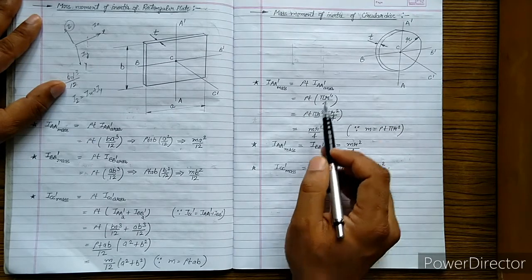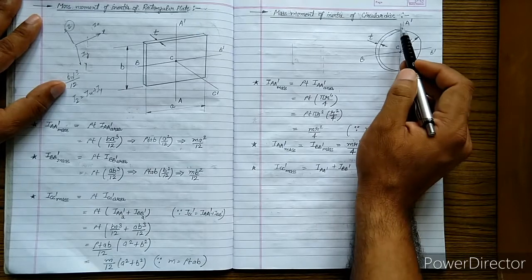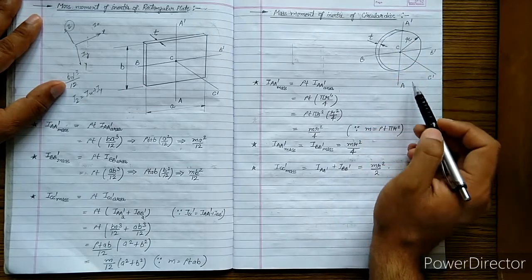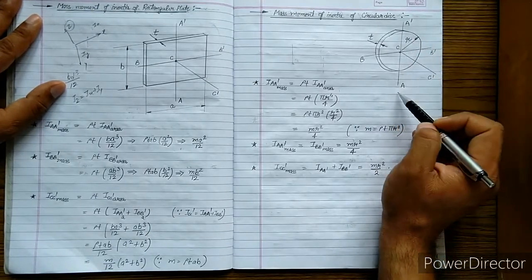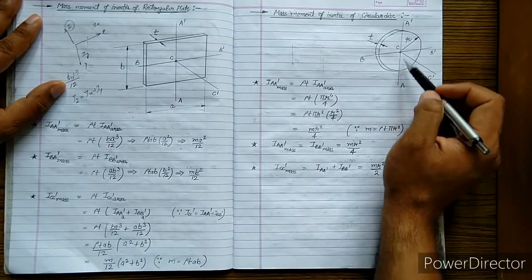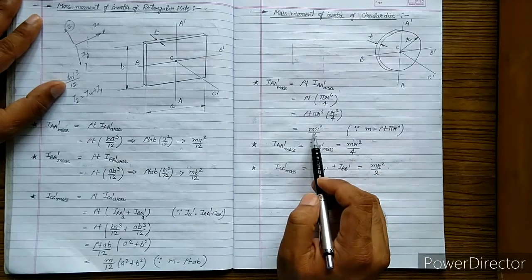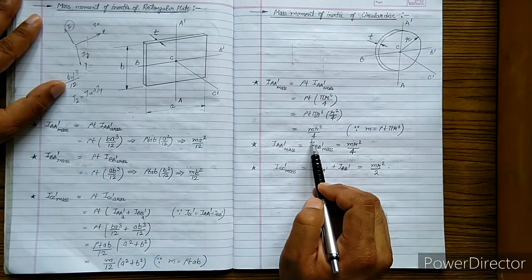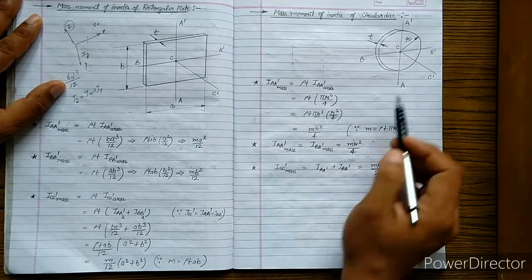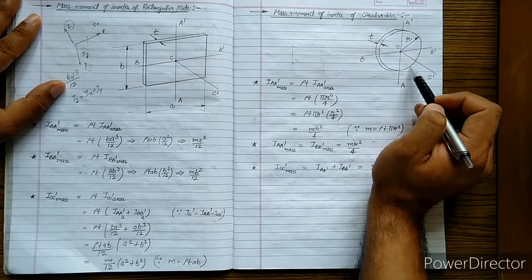This means we get our answer: Mr²/4. The mass moment of inertia of a circular disc about axis AA' passing through its own plane is equal to Mr²/4.